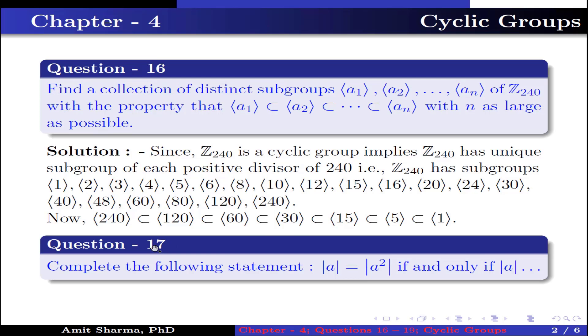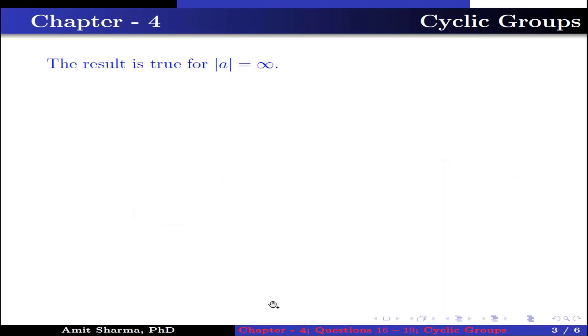Question number 17: Complete the following statement — the order of a is equal to the order of a² if and only if the order of a is... Given that the order of a equals the order of a².